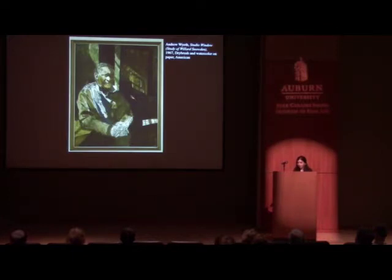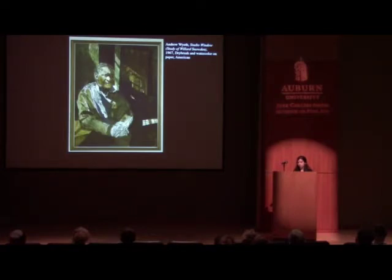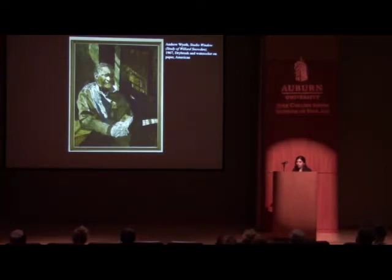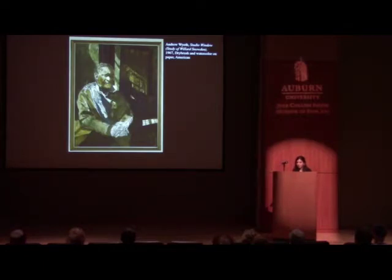It is clear just from looking at the study that Wyeth paid particular attention to how he depicted Snowden. His use of color renders a stream of light coming down from an unseen window that casts Snowden in light when he is otherwise concealed in shadows. This can be interpreted as a visual representation of the aura of mystery Snowden had about him. Wyeth had a visual interest in the architectural features of Snowden's hands and clothing, which he articulates in graphite. Wyeth believed individuals of color — specifically African Americans — were missing in painting during the time he was actively producing art.